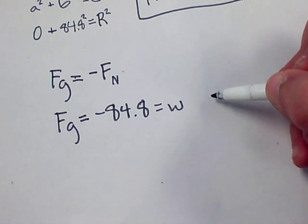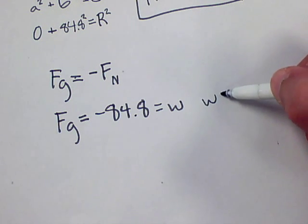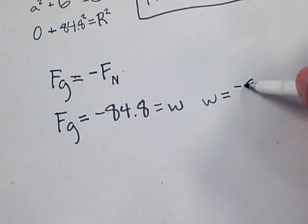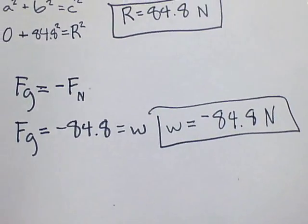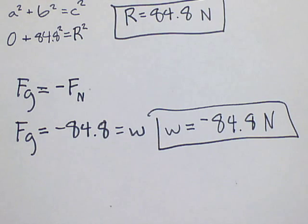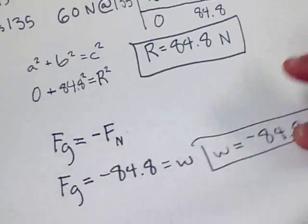And equals negative 84.8, which is equal to the weight. So the weight of the stoplight is equal to negative 84.8 newtons, or 84.8.